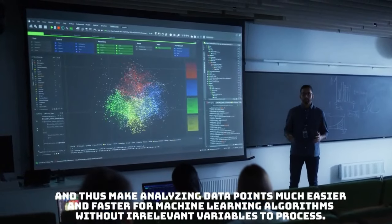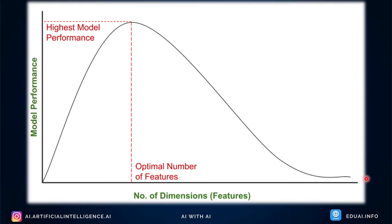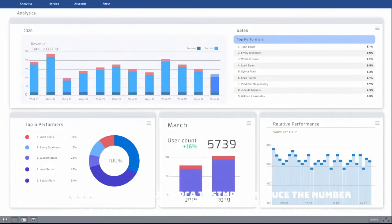Quality data is the most important aspect for optimal model performance. If you have hundreds of features, it becomes very difficult to understand which features are relevant to your model's accuracy. After reducing dimensions, it becomes easier to understand and visualize the dataset — especially if you reduce to 2D, 1D, or 3D. To sum up: the idea of PCA is to reduce the number of variables while preserving as much information as possible.